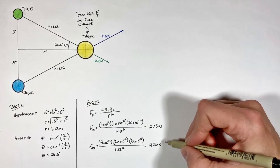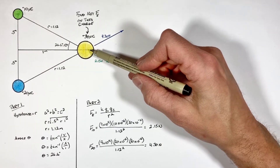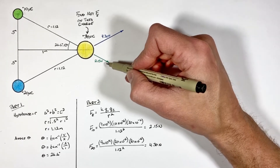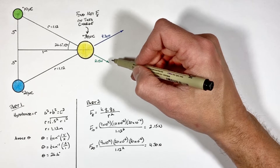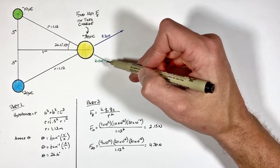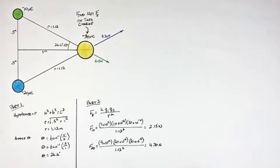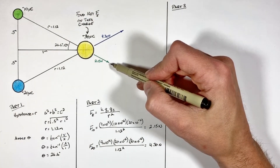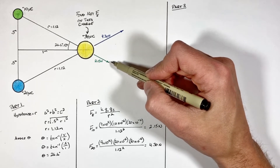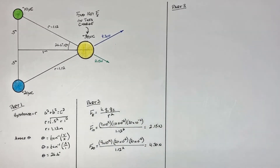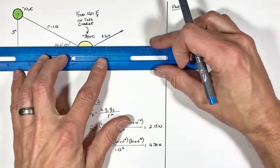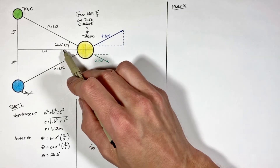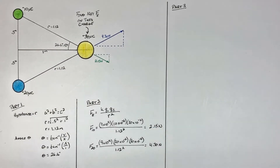Now that we've found these two individual forces, to find the total or net force on this charge we don't simply add them together. These two forces are vectors, so we need to go through the process of vector addition. To add vectors in two dimensions we need to break those vectors up into their horizontal and vertical components, and it's in solving for those components that the 26.6 degrees comes into play.